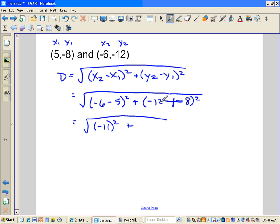And negative 12, plus 8, becomes negative 12 plus 8 is negative 4 squared. Can you tell I just lost my train of thought for a minute there? Let's see. Negative 11 squared is 121 plus, negative 4 squared is 16, and 121 plus 16 is 137, and the square root of 137 is 11.7 units.